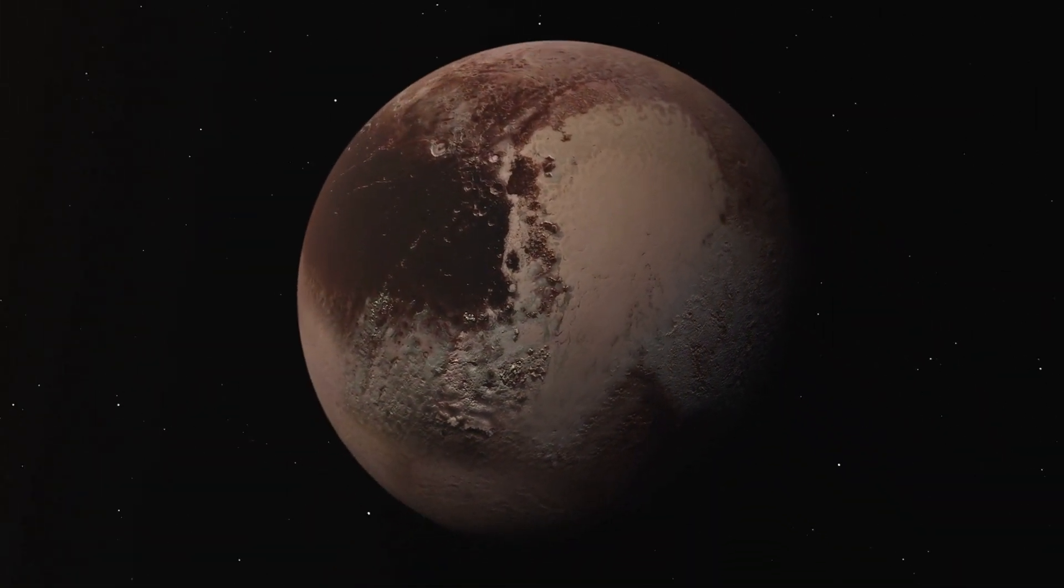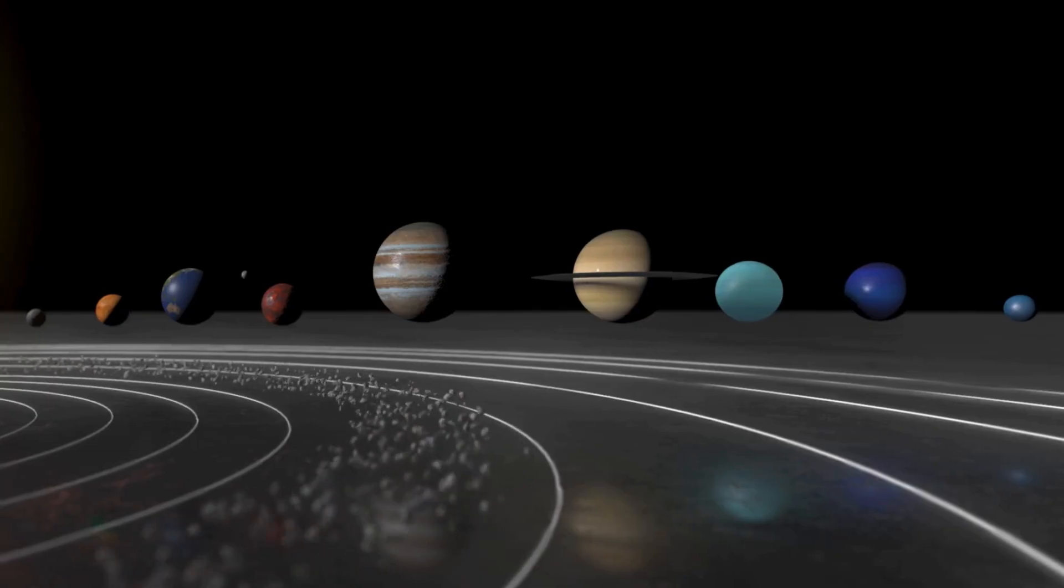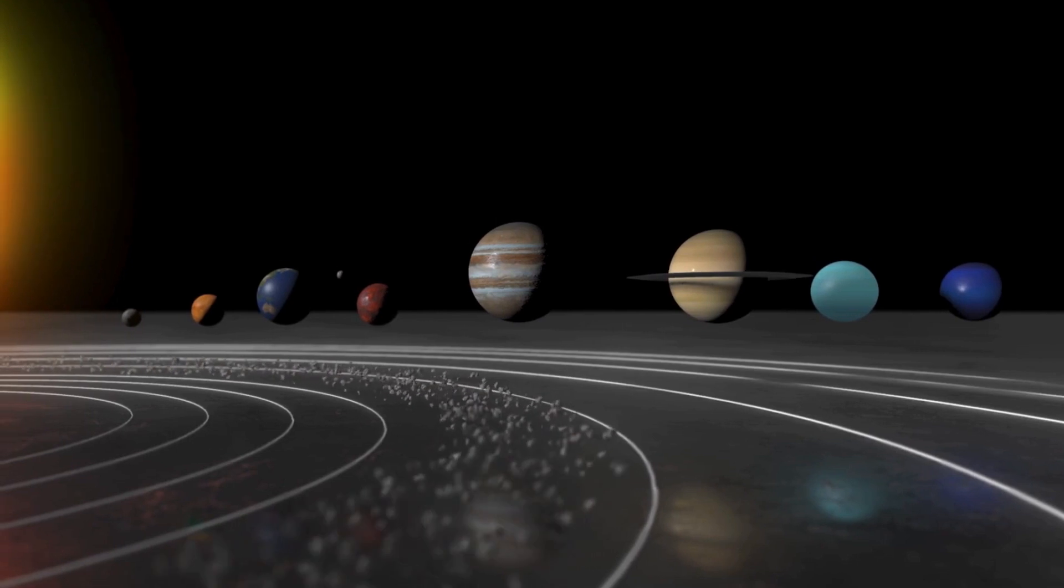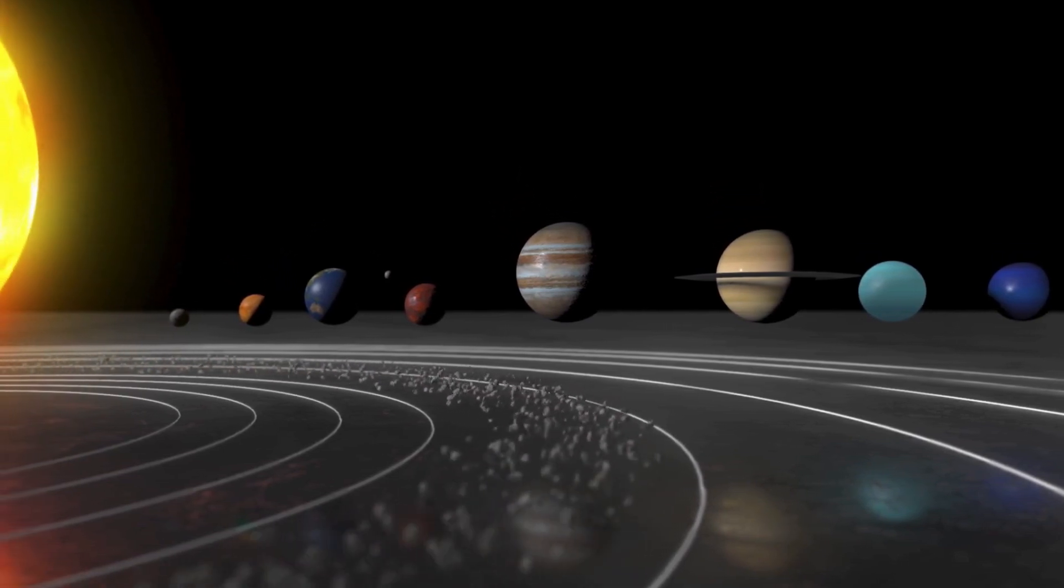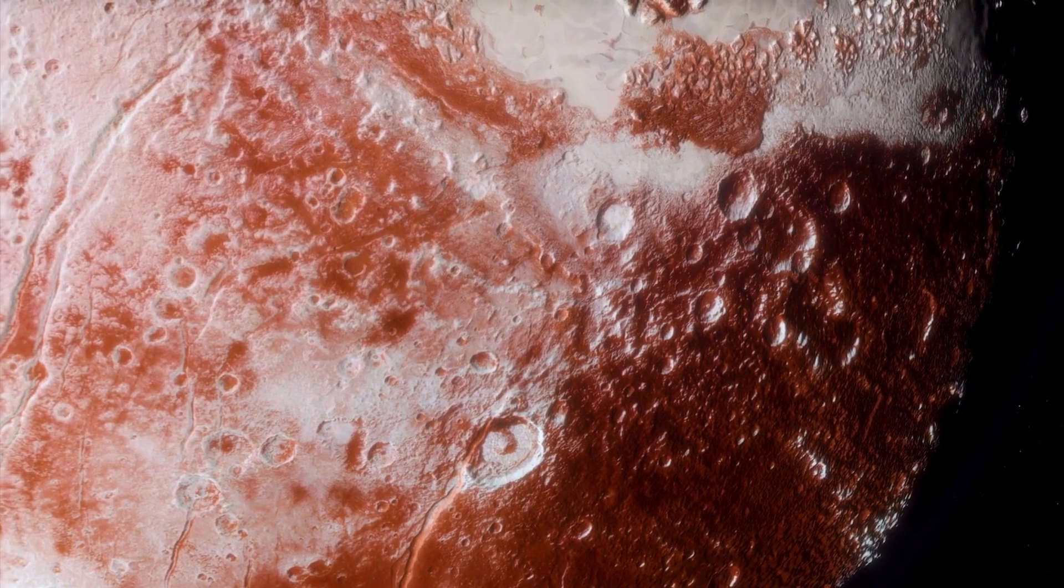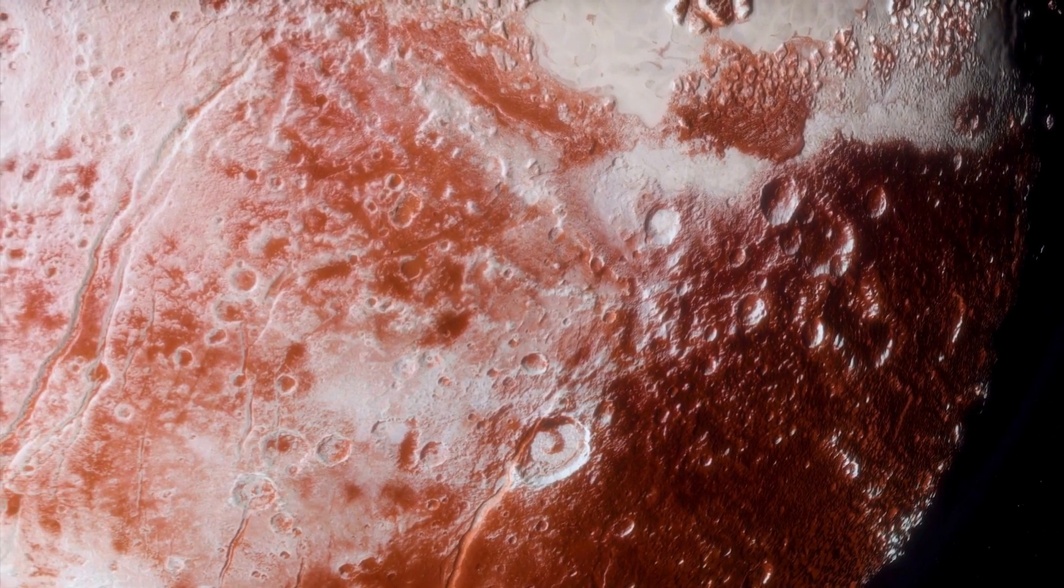One of the most intriguing aspects of Pluto's orbit is its intersection with Neptune's path. For about 20 years in each orbit, Pluto actually comes closer to the Sun than Neptune, defying what we might expect from their positions in the solar system. This leads to the natural question: why hasn't Pluto collided with Neptune?